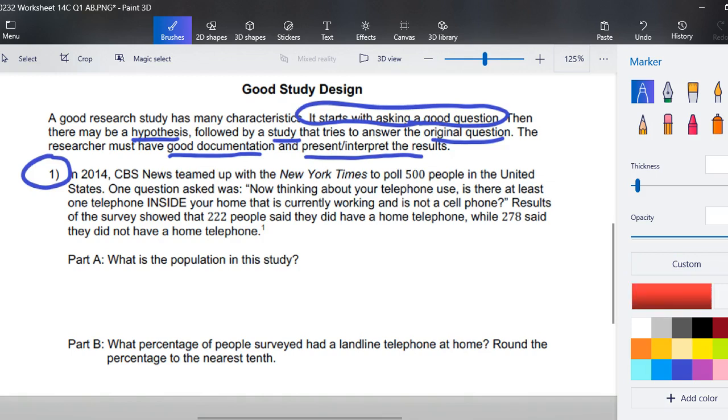In 2014, CBS News teamed up with the New York Times to poll 500 people in the United States of America. One question asked was, now thinking about your telephone use, is there at least one telephone inside your home that is currently working and is not a cell phone? Results of the survey showed that 222 people said they do have a home telephone, while 278 said they did not have a home telephone.